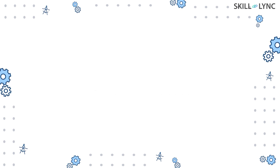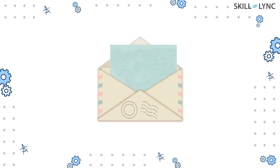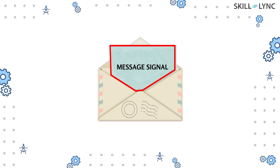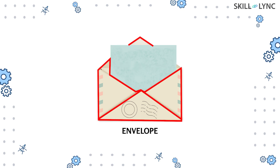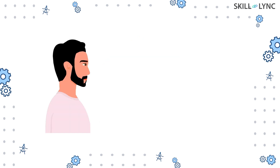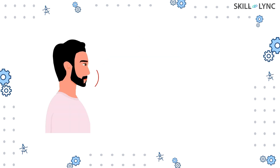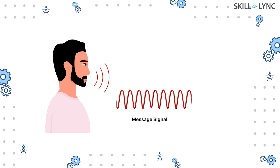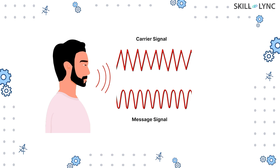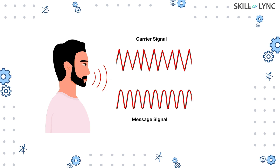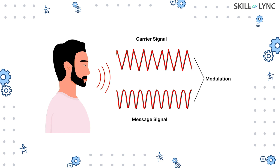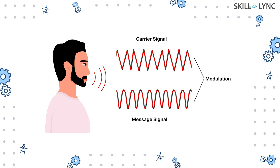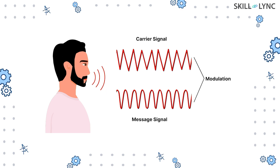So what is modulation? You can consider the process of modulation to be analogous to sending a written letter in an envelope. The envelope makes sure that the information reaches the desired destination. Similarly, when a piece of information is sent using a telecommunication network, the signal to be sent is called the message signal. Another signal added along with it is called the carrier signal. Here the message signal is the written letter and the carrier signal is the envelope.